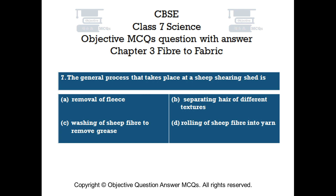The general process that takes place at a sheep shearing shed is: Option A Removal of fleas, Option B Separating hair of different textures, Option C Washing of sheep fiber to remove grease, Option D Rolling of sheep fiber into yarn.